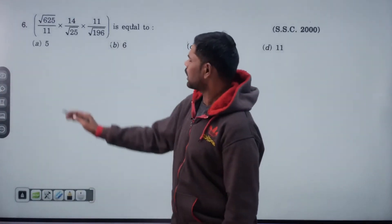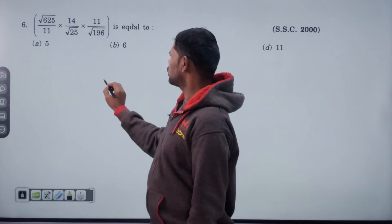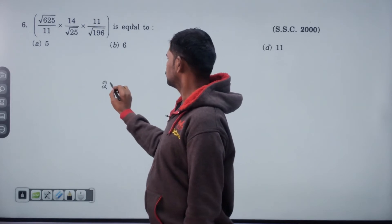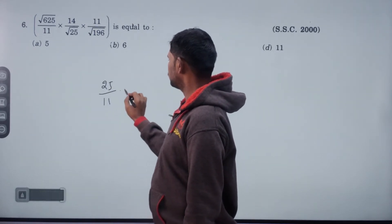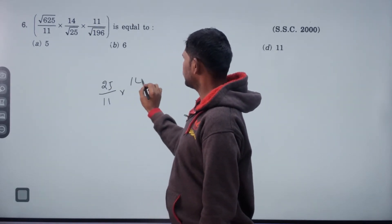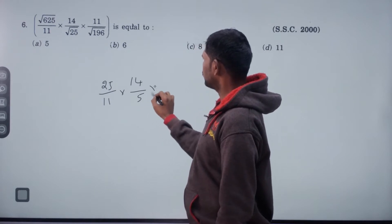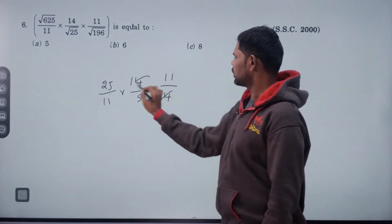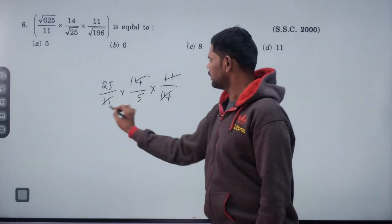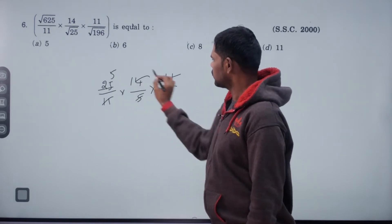Root of 625 by 11, root 625 value is 25. 25 by 11 into 14 by root 25 is 5. 11 by 14 gives 14, 11, 5. Answer is 5.